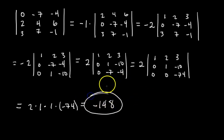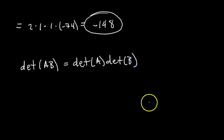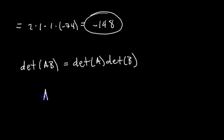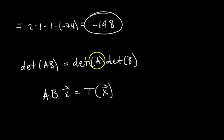Now let's introduce some properties of determinants. The determinant of the product of two matrices equals the determinant of the first times the determinant of the second: det(AB) = det(A)·det(B). Geometrically, determinants represent area scaling factors. When you apply transformation B then A, you first scale area by det(B) then by det(A), so the combined scaling factor is just their product.